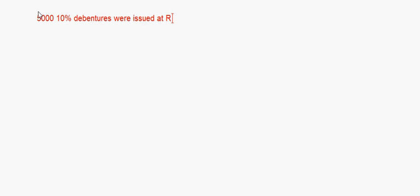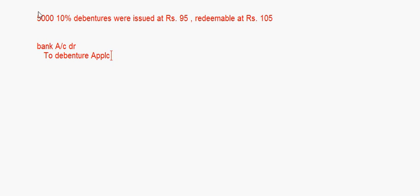Let's take up a small question. 5,000 ten percent debentures were issued at ₹95, redeemable at ₹105. First of all, bank account debit to debenture application account with the amount of money you receive on application. So that is 5,000 into 95 — you are getting only ₹95, the debentures are issued at a discount of ₹5, so that comes to ₹4,75,000.